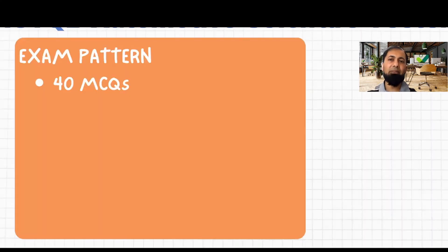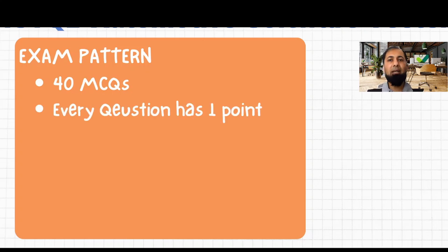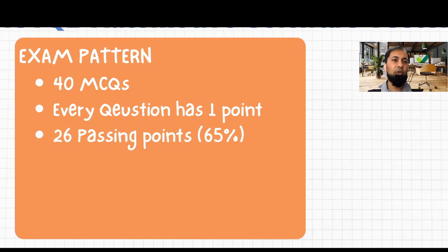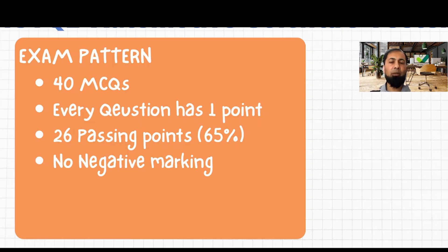This exam consists of 40 multiple choice questions. Every question has one point, so the maximum score is 40 points. To pass, you must answer 26 questions correctly, which corresponds to 65%. There is no negative marking, so if you are not sure about a question, you can make an intelligent guess — if it works you get a point, if it doesn't, you lose nothing.